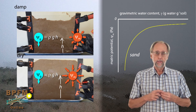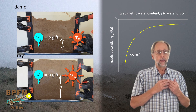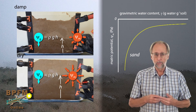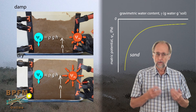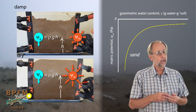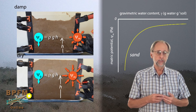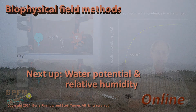The stronger the matric potential, the higher the water will have to be drawn upward for the gravity potential to come into equilibrium with the matric potential.